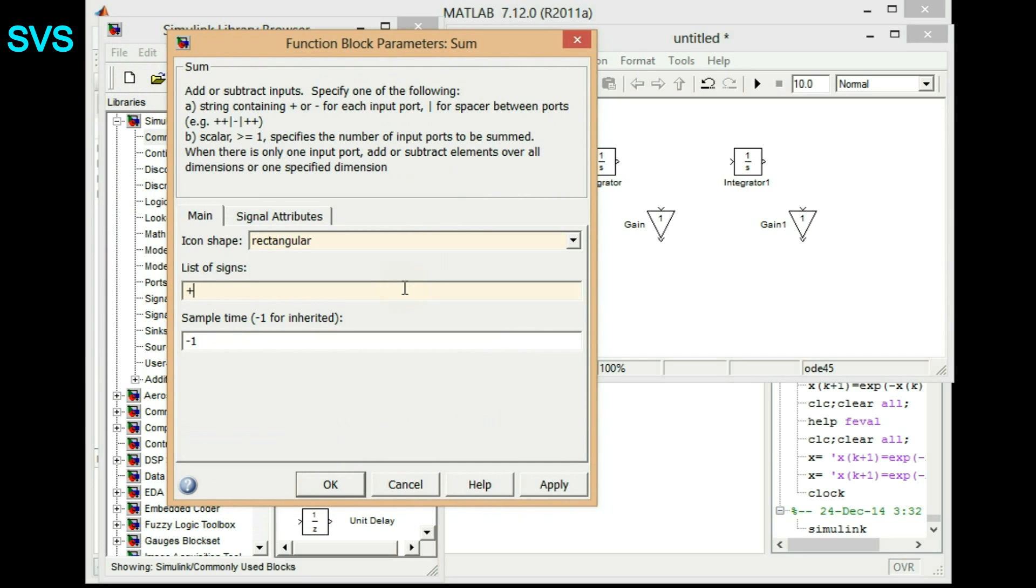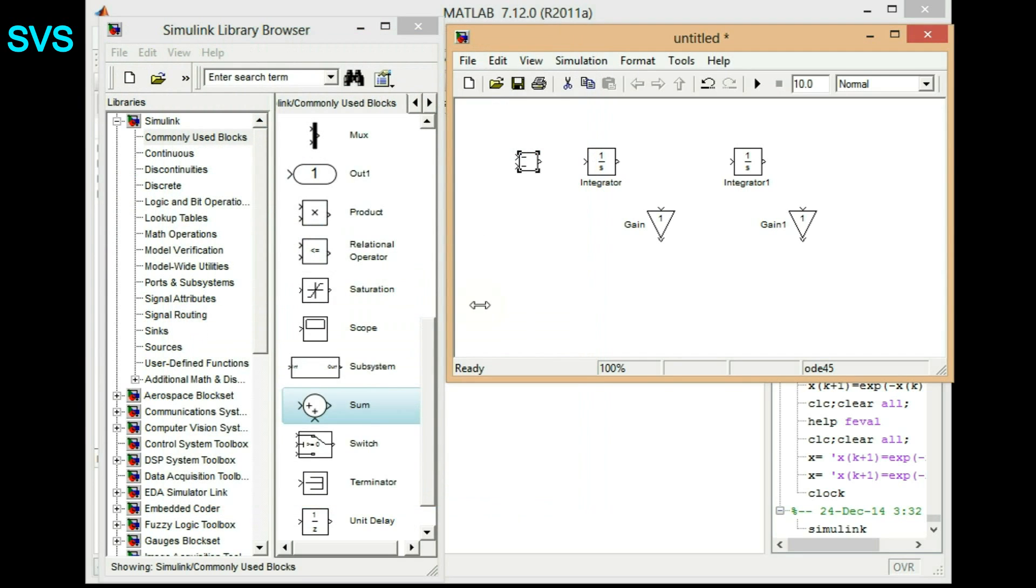So we'll require sum block and we'll change it to rectangular frame and we'll assign the signs which are minus and minus. We can write plus and plus also but we'll have to modify the gain then. So we'll choose minus and minus and then we'll connect it using click holding the control and again the click to the next block. We'll connect it again to x1. We are assuming the output as x1 that is nothing but our y and in-between term is x2.